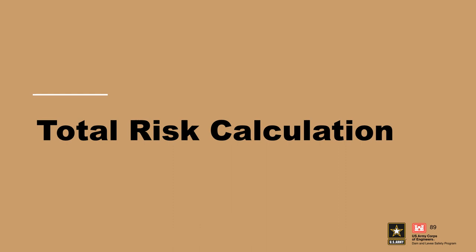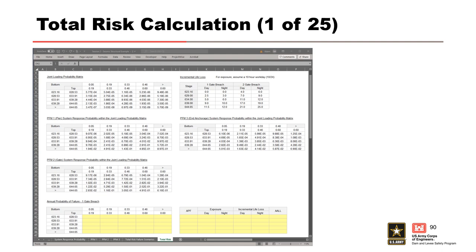At this point in the process, we've gone through the hard work of deriving the failure equations from the event tree, so now we can move on to calculating the total project risk. For the total risk calculations, we will need the joint loading probability matrix and the system response probability tables within it for all three of our PFMs. All those tables have been copied onto one sheet for ease, and from there the process of calculating the total APF is the same as for the marginal PFM calculations, except we use the one-gate breach and two-gate breach failure equations from the total risk event tree. To calculate the one-gate breach APF, plug in the one-gate breach equation into the table.